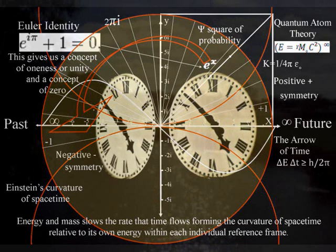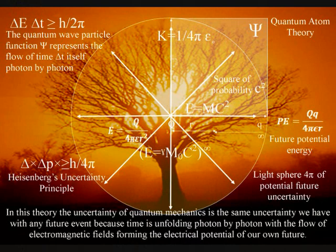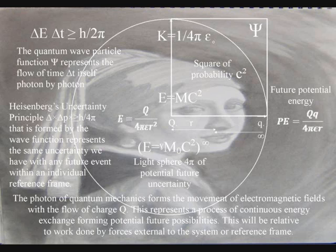The universe is in a process of continuous creation, continuously coming into existence with each new photon oscillation. Because the photon is the carrier of the electromagnetic force, electrical potential is the same potential we have with any future event within our own reference frame. We see and feel this process as the flow of time itself.